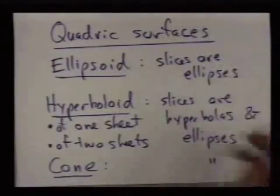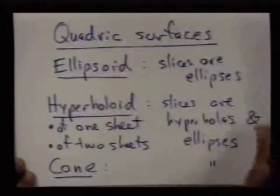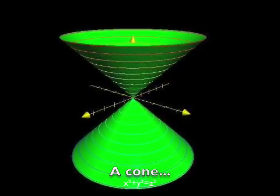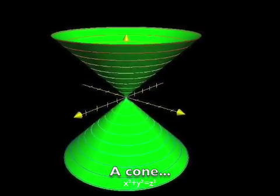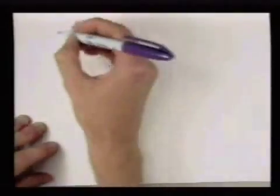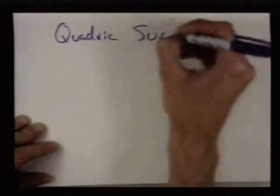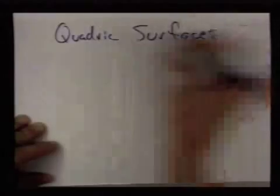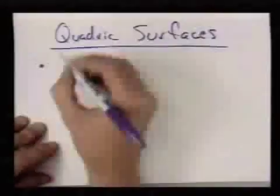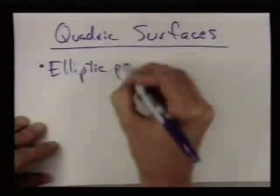So that's one, two, three, four different kinds of quadric surfaces. And then there are two more. The elliptic paraboloid.